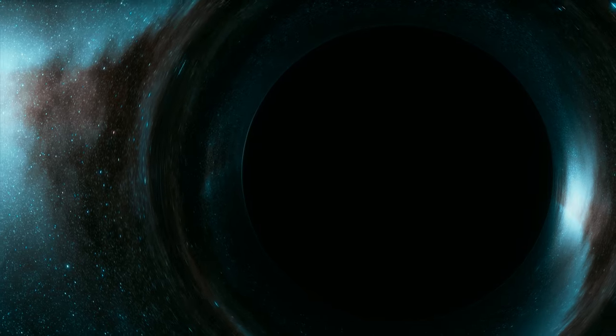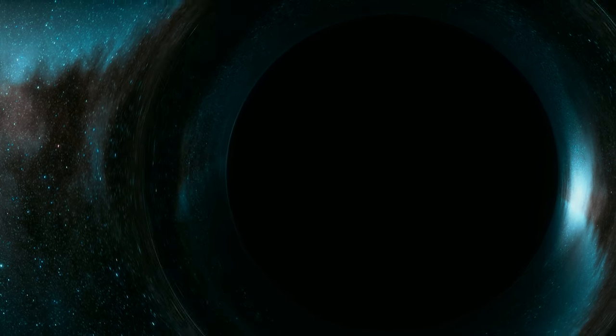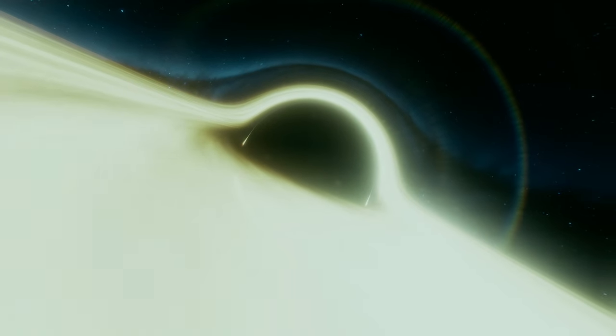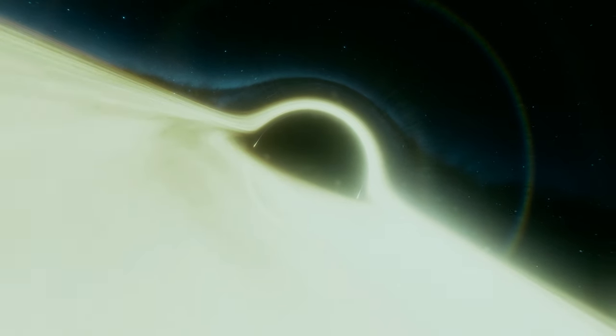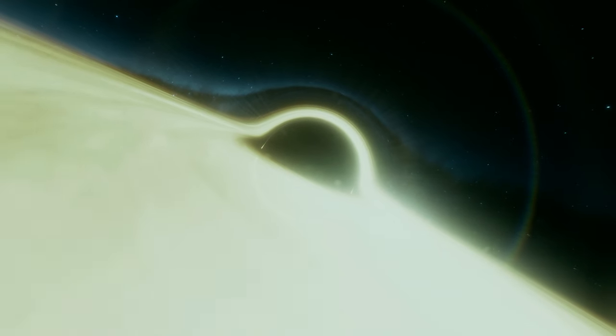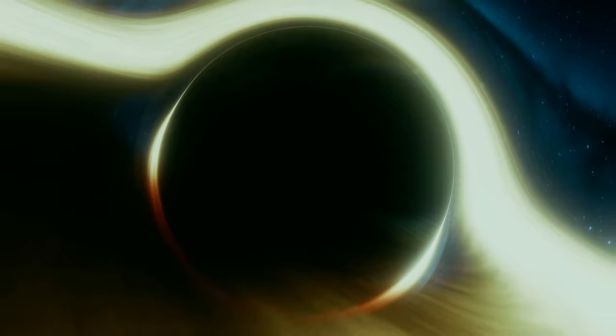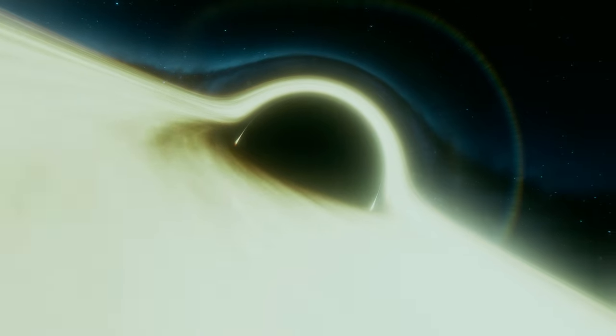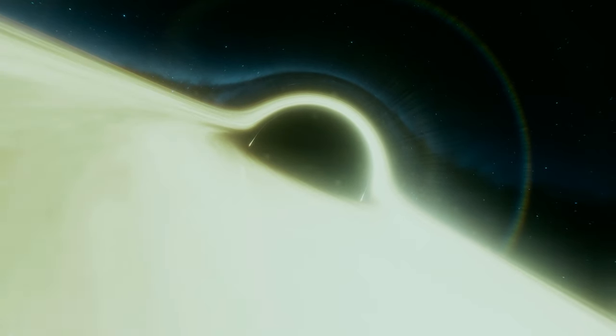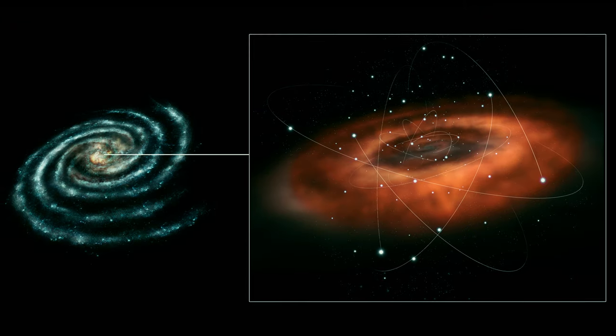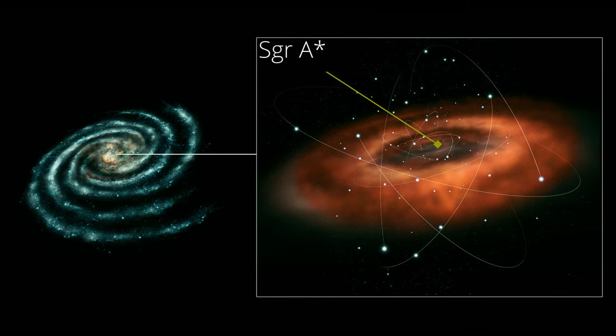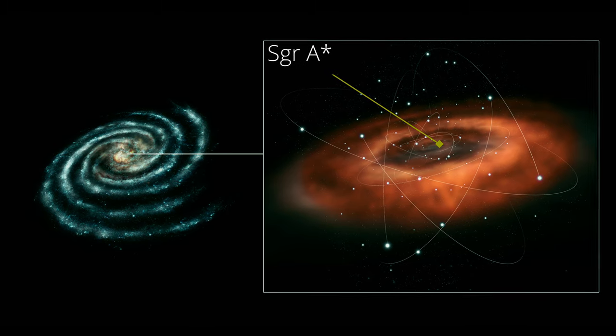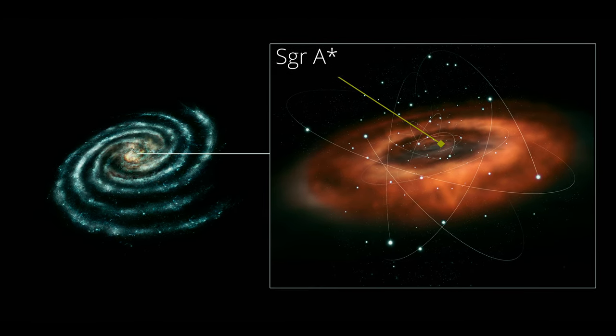Black holes, known as places in space where gravity pulls so much that even light cannot get out. The gravity is so strong because matter has been squeezed into a tiny space. They can't be seen. There are black holes throughout the Milky Way, with scientists estimating between 10 million to a billion of them, the most popular of which is Sagittarius A, or SGRA for short, the supermassive black hole at the heart of the Milky Way.